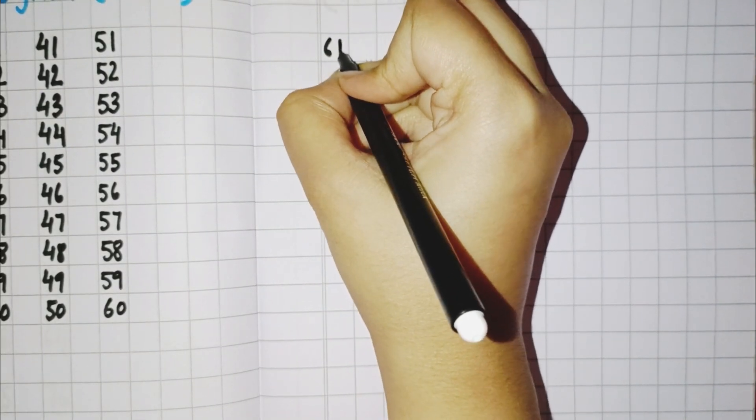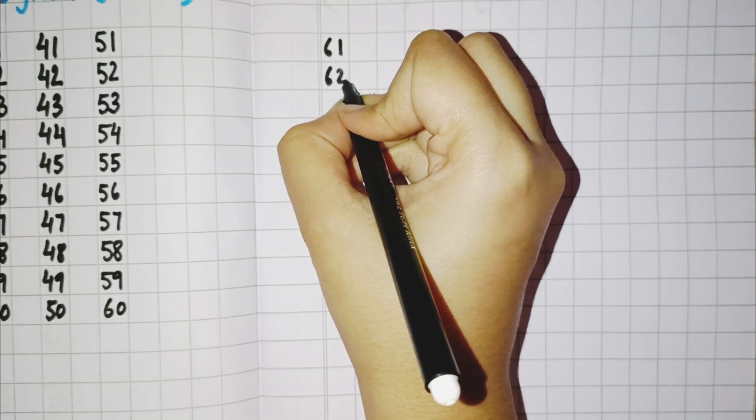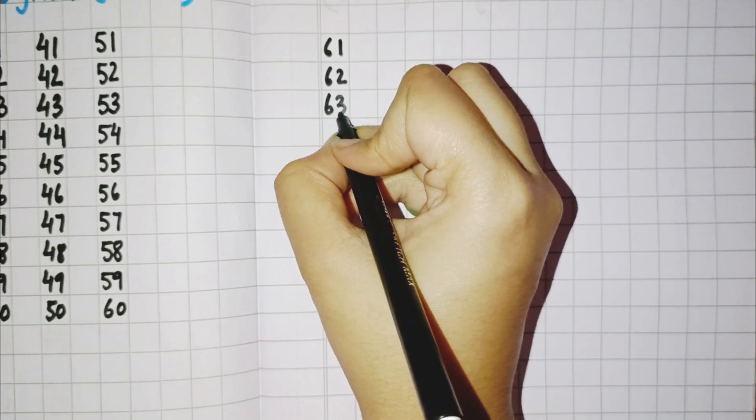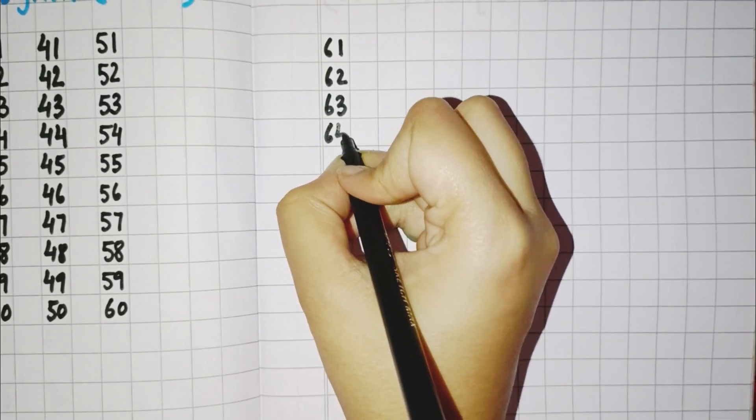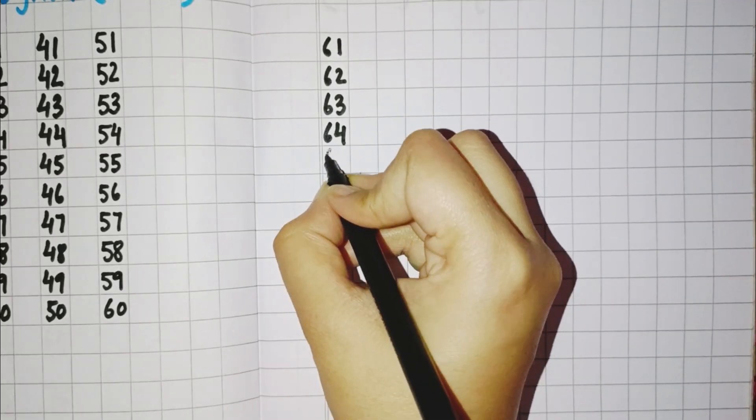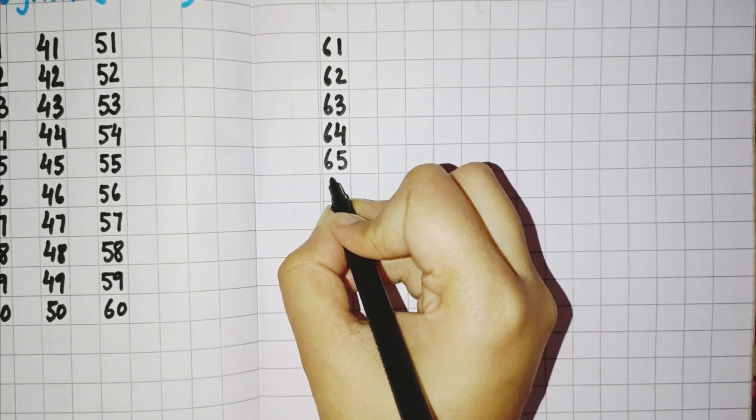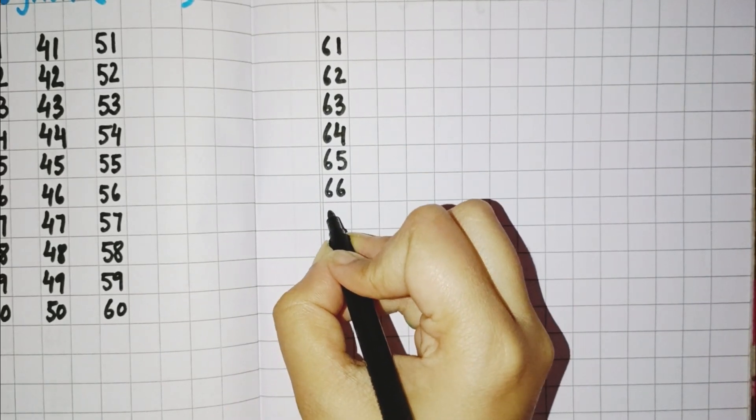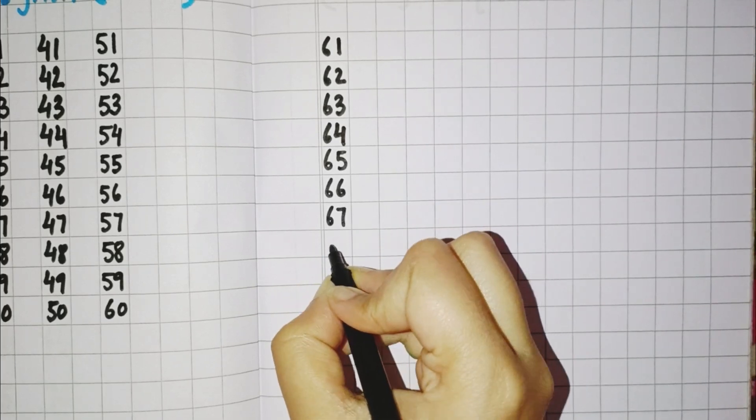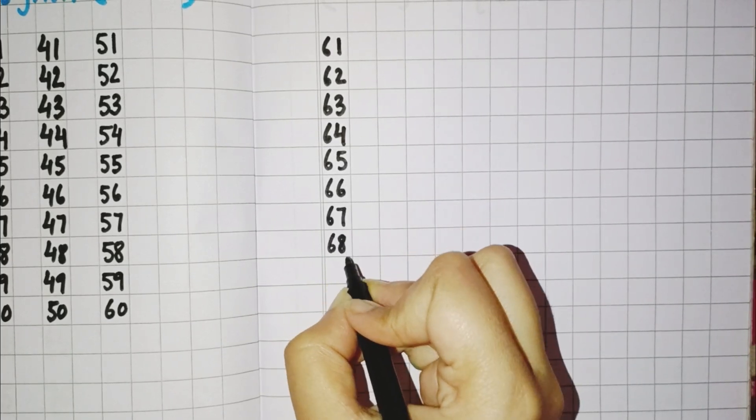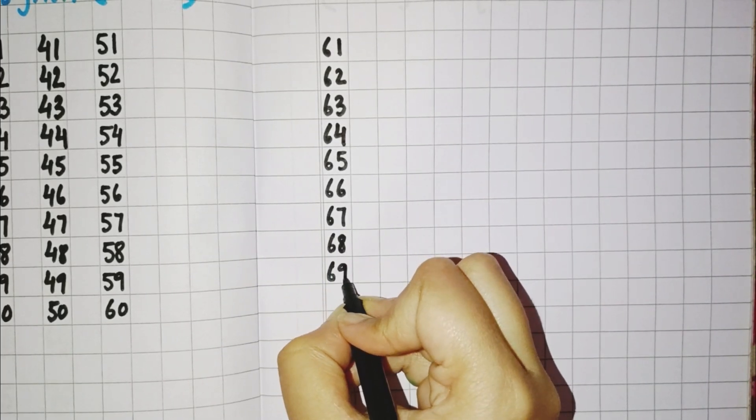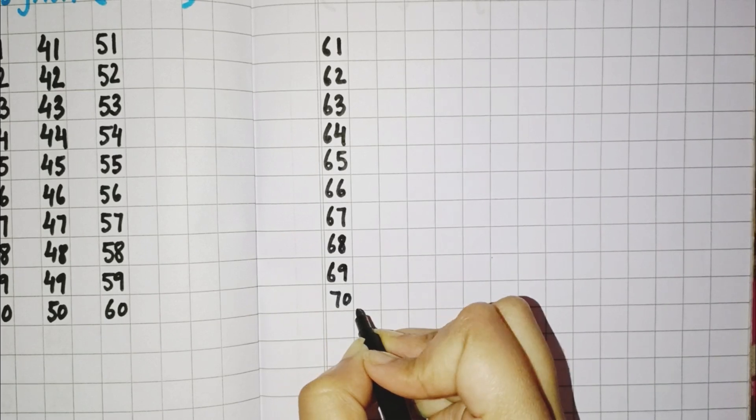Then 6, 61, 61. 6, 62, 62. 6, 63. 6, 4, 64. 6, 5, 65. 6, 6, 66. 6, 7, 67. 6, 8, 68. 6, 9, 69. 7, 0, 70.